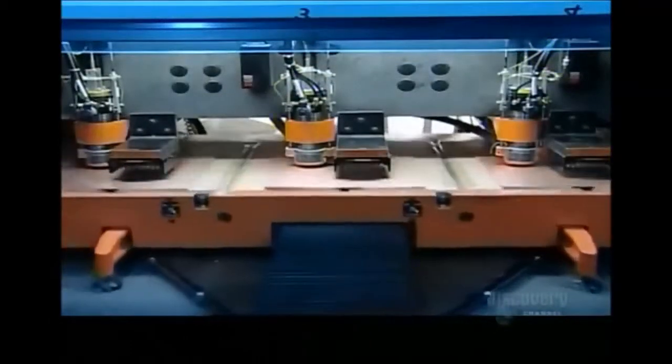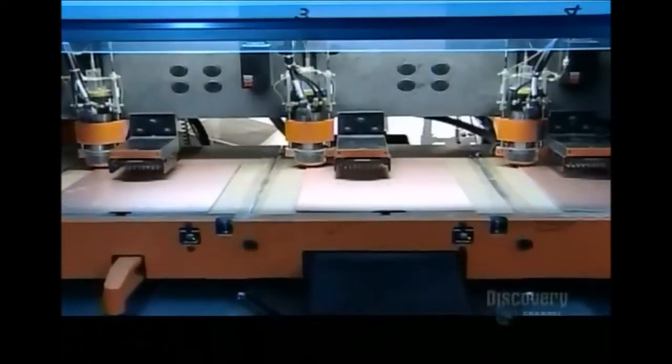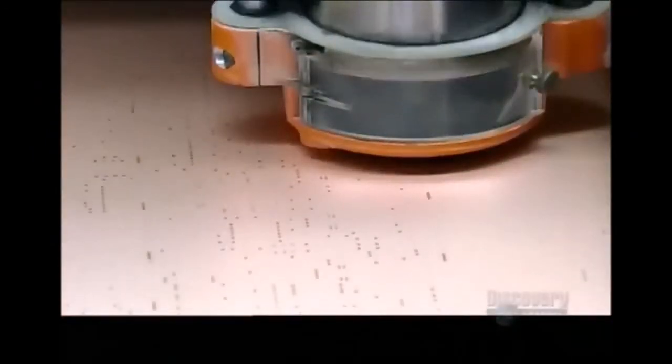Elsewhere in the factory, the amp's circuit board takes shape. It'll go inside the chassis. A computer-guided drill makes tiny holes in a laminate board that's coated with copper. The holes are for the board's various electronic components.